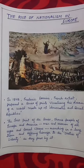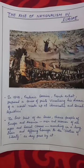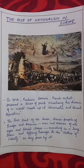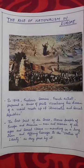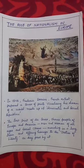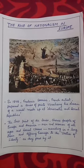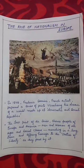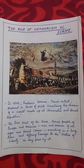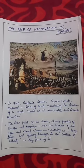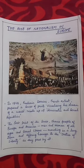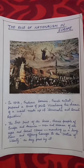Before we start, we will look at one of the figures drawn by Frédéric Sorrieu in 1848. Sorrieu, a French artist, prepared a series of prints visualizing his dream of a world made up of democratic and social republics. The first print of the series shows people of Europe and America — men and women of all ages and social classes — marching in a long train.